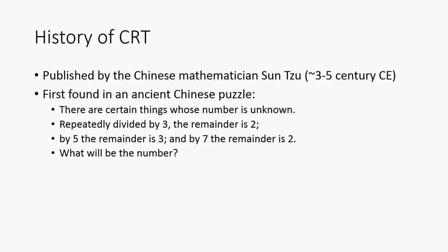There are certain things whose number is unknown. When you repeatedly divide by 3, the remainder is 2. By 5, the remainder is 3. And by 7, the remainder is 2. What is this number?